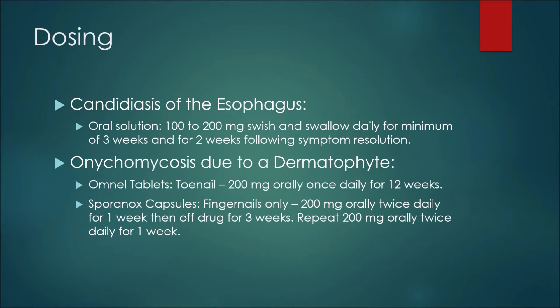If a patient was using Sporanox capsules for a fingernail, they may use 200 milligrams orally twice daily for one week, then come off the drug for three weeks, and then repeat 200 milligrams orally twice daily for one week.